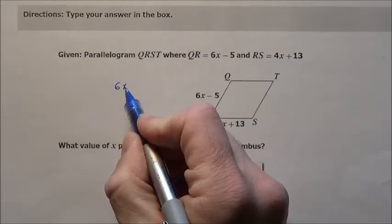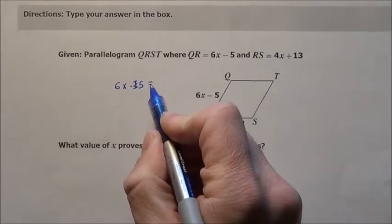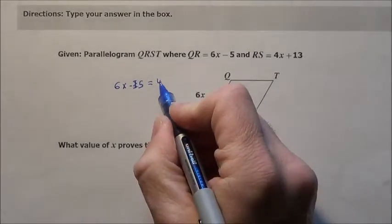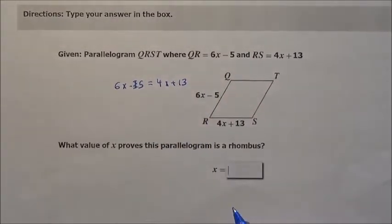So all I'm going to do is take 6x minus 5 is equal to 4x plus 13, solve for x, and then boom, put it right in the box.